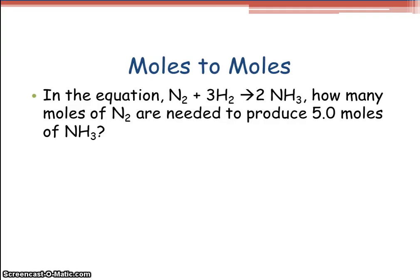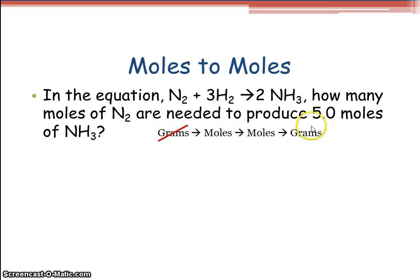Moles to moles. In the equation N₂ + 3H₂ yielding 2NH₃, how many moles of N₂ are needed to produce 5.0 moles of NH₃? Using grams to moles to moles to grams — we are not starting with grams, we're starting with moles, so cross off the first grams. Since we're solving for moles, we don't need the last grams either, so cross that off. Now you just need two steps.